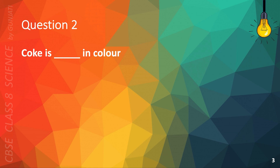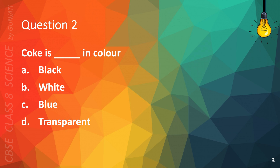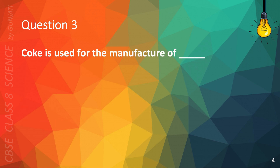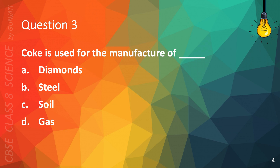Question 2. Coke is blank in color? A. Black, B. White, C. Blue, or D. Transparent? The correct answer is A. Black. Question 3. Coke is used for the manufacture of A. Diamonds, B. Steel, C. Soil, or D. Gas? The correct answer is B. Steel.